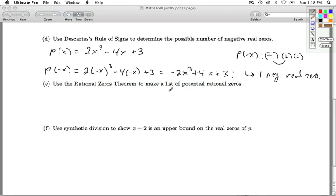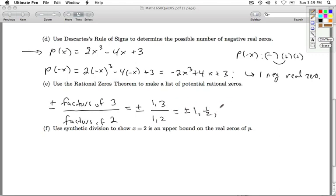Use the rational zeros theorem to make a list of potential rational zeros. So, I go back once again to my original polynomial P of x. I'm looking at plus or minus factors of the constant term, in this case 3, over the leading coefficient. Leading coefficient here is 2. So, it's plus or minus 1 or 3 over 1 or 2. So, it's plus or minus 1, a half, 3 or 3 halves. Those are the possible rational zeros.